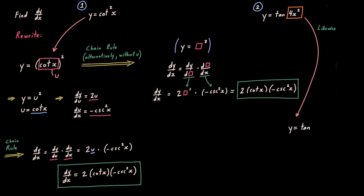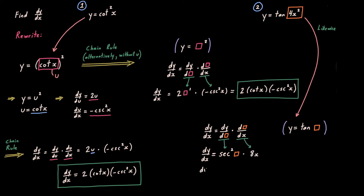Likewise, let orange box be 4x squared — the thing we're taking tangent of. So y equals tangent of orange. The derivative of y with respect to x is the derivative of y with respect to orange, times the derivative of orange with respect to x. The derivative of tangent of orange is secant squared of orange, and the derivative of orange with respect to plain x is 8x.